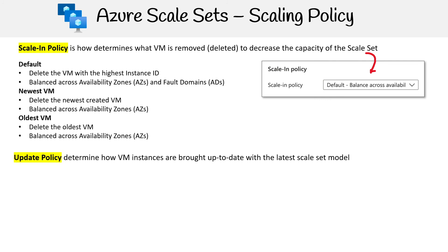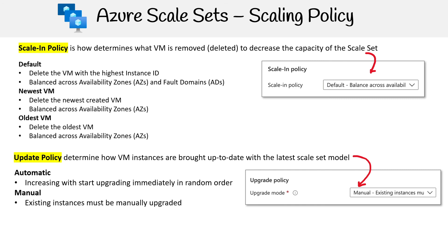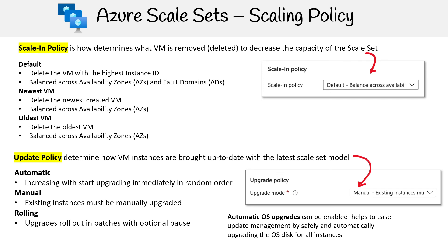Then you have an update policy, which determines how VM instances are brought up to date with the latest scale set model. It's another dropdown with a few options: automatic starts the upgrade immediately in random order; manual means existing instances must be manually upgraded; or rolling, which upgrades in batches with an optional pause. You can also enable automatic OS upgrades to safely and automatically upgrade the OS disk for all instances, helping ease update management.